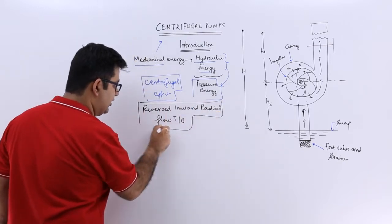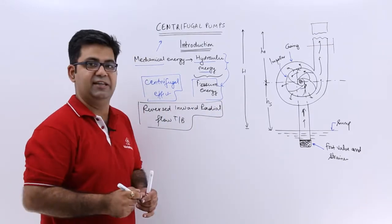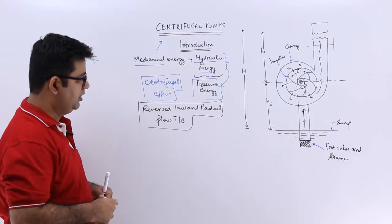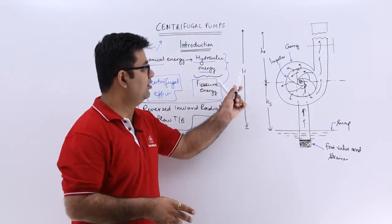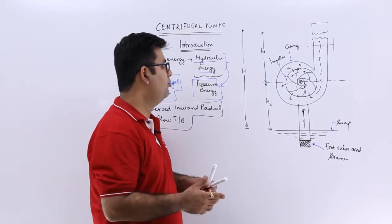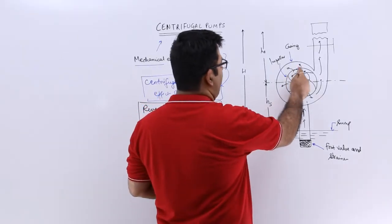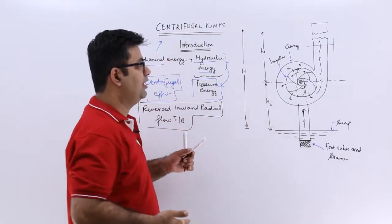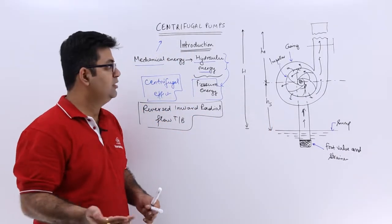So you can look at a centrifugal pump in this fashion as well. So this is a basic schematic of a centrifugal pump. The main components of a centrifugal pump are that you have an impeller, which is somewhat like the runner in the turbines.